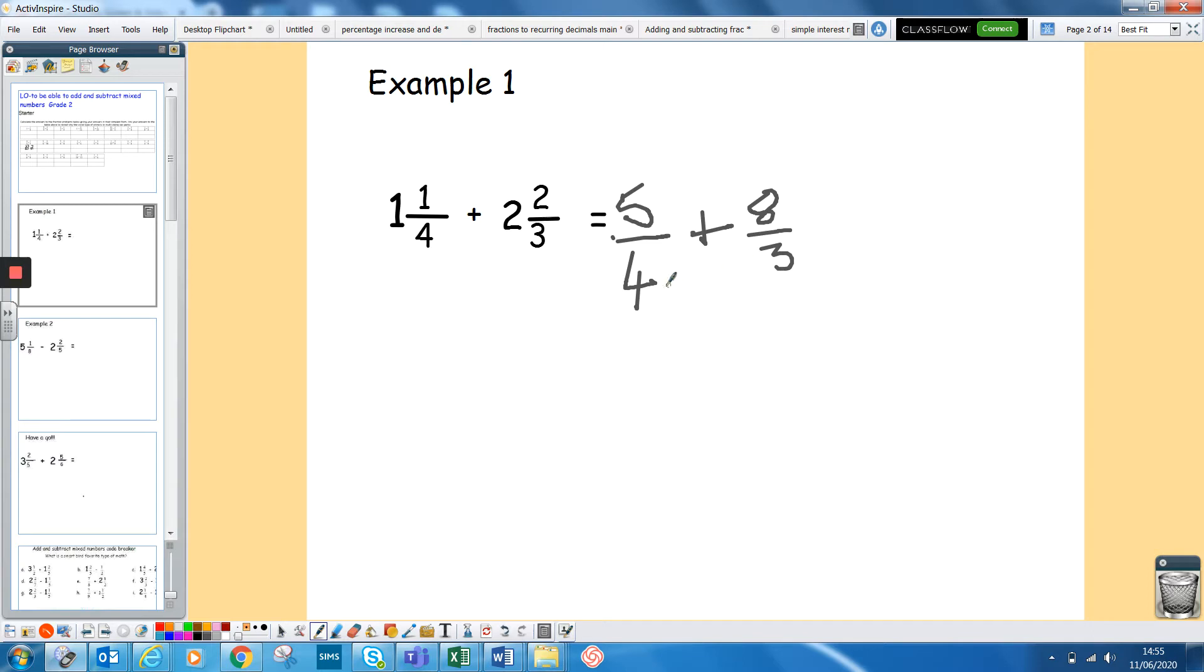We need to get a common denominator. Again, easiest way, multiply those two together. So four times three is 12. Because we've done four times three, you have to do five times three, you get 15. And then because we've done three times four, we have to do eight times four, which is 32. Now we've got a common denominator. We can add those together, add the tops together to get 47, and the common denominator stays the same, 12.